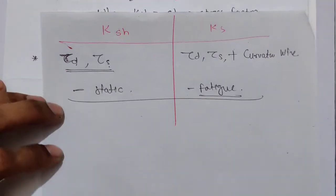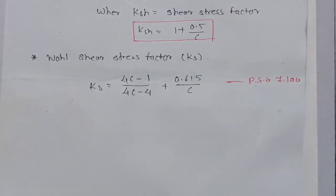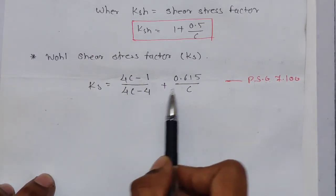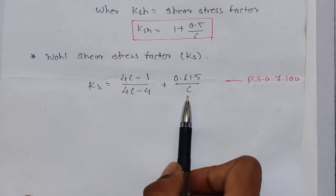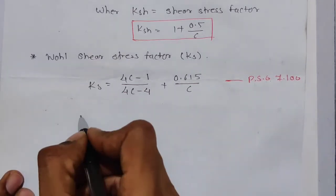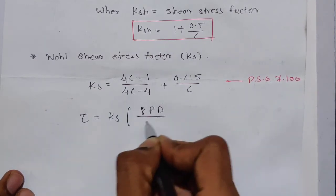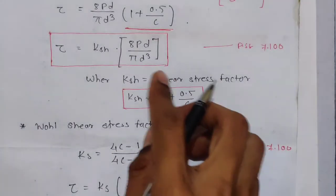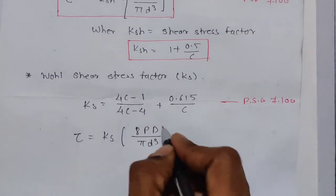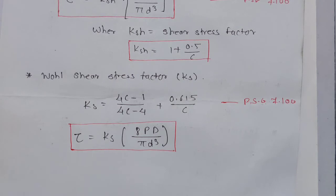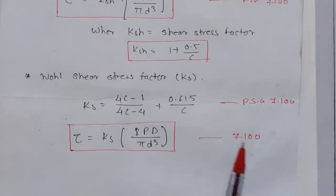K_s = (4C − 1)/(4C − 4) + 0.614/C, where C is the spring index. Therefore, the final shear stress formula is τ = K_s · 8PD/(π·d³). Just replace K_sh with K_s. This is the required formula we will use for solving problems and it is given in PHG 7.10.